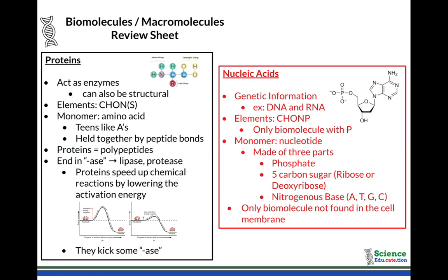The last two: we have proteins. Proteins act as enzymes — that's their main role for the purposes of this unit. Enzymes are molecules that speed up chemical reactions. Proteins can also be structural components, making up parts of your body and other organisms. Here our elements are a little different: we have CHO, but now we're adding nitrogen and sometimes sulfur — that's the N and S. I like to think proteins ends with N-S, so CHONS. Nitrogen and sulfur being added in.